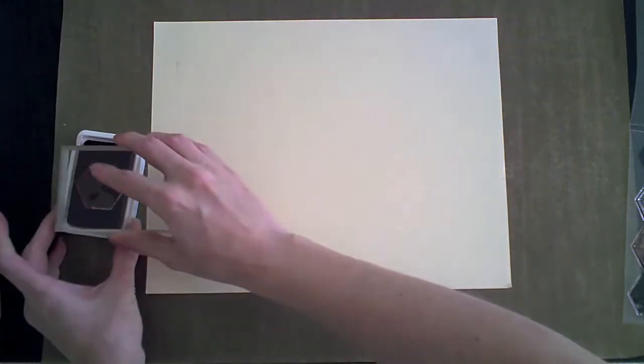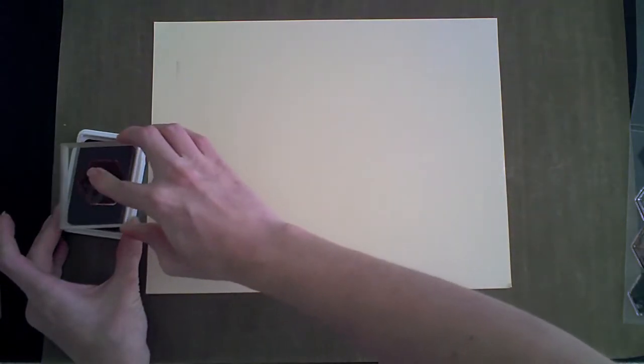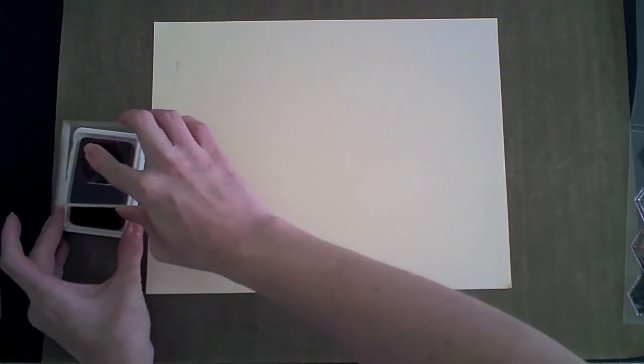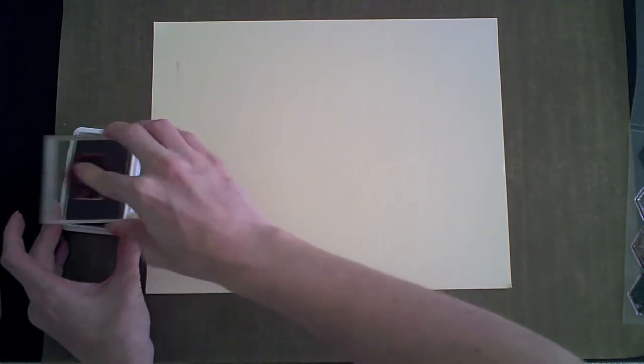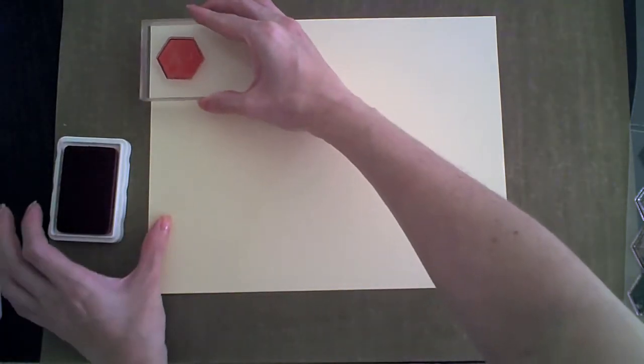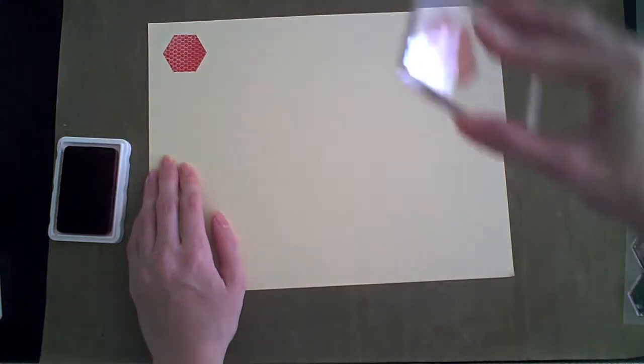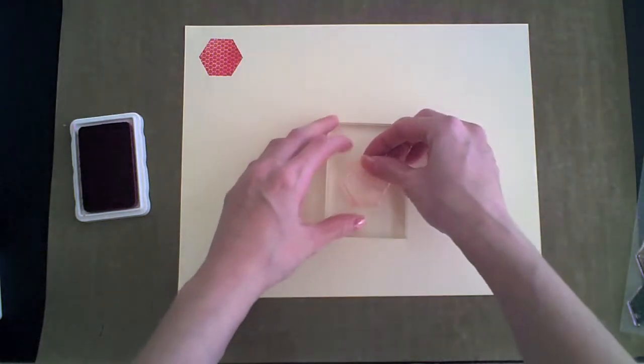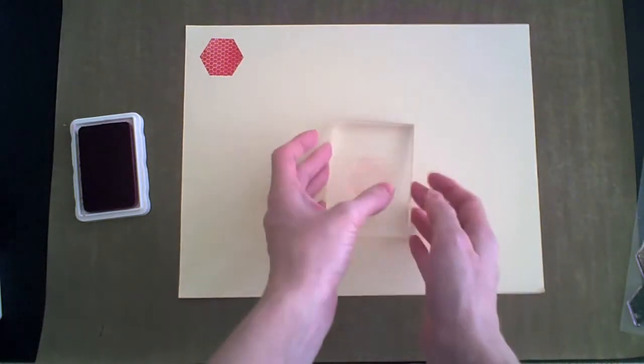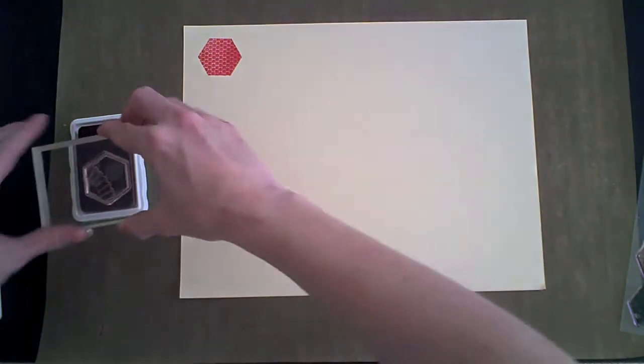And now let's see it in action. I start with the negative hexagon stamp and make sure it's well inked and that it's saturated. Apply some pressure and also wait a few seconds for the ink to get absorbed better into the cardstock.